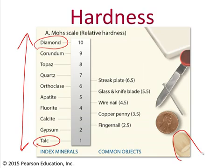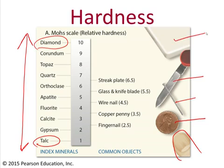So hopefully you brought your fingernails to class today. You will also be using a copper penny, wire nails, a harder piece of metal like a knife blade or a masonry nail, and then there's a streak plate as well. Some labs will also use glass. Glass is about the same hardness as the knife blade, about 5.5 on the Mohs scale.